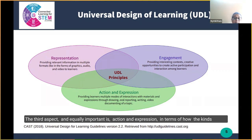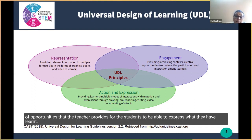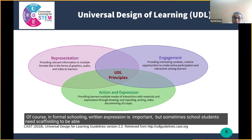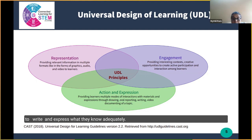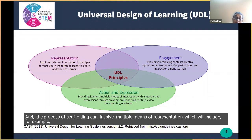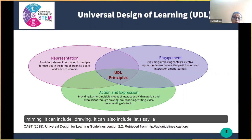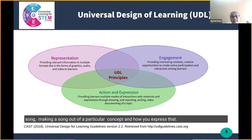The third aspect, equally important, is action and expression — the kinds of opportunities a teacher provides for students to express what they have learned. In formal schooling, written expression is important, but sometimes students need scaffolding to be able to write and express what they know adequately. The process of scaffolding can involve multiple means of expression, which could include miming, drawing, making a song out of a particular concept — different ways students can express their understanding.